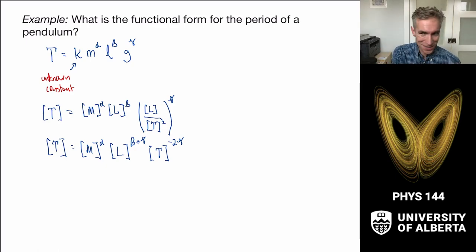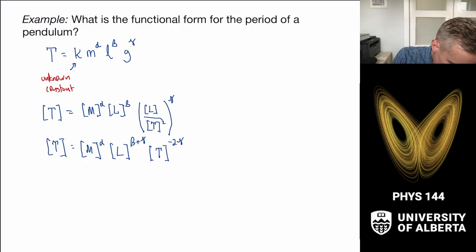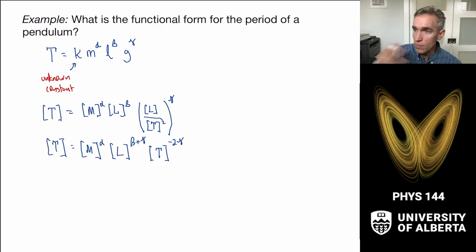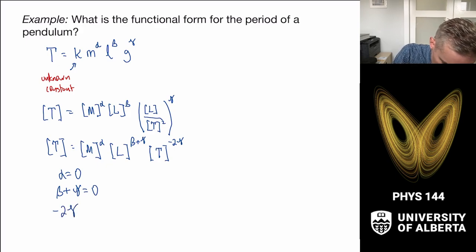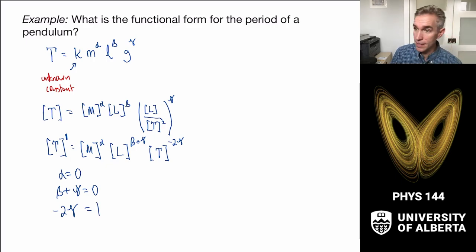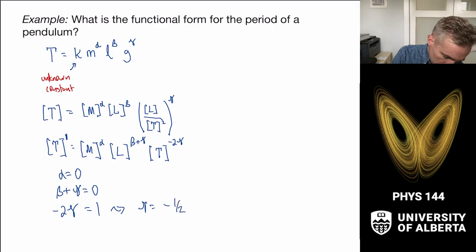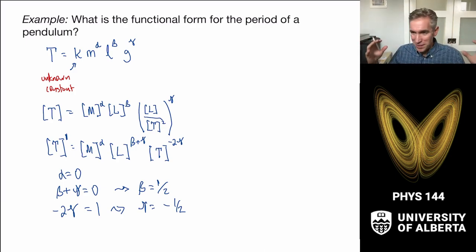On the right-hand side there's a bunch of stuff, and all of it has to go away except for one power of time. That tells us that α = 0, that β + γ = 0, and that −2γ = 1. This gives us a nice little system of equations. Solving: γ = −½, and substituting that into β + γ = 0 gives β = ½.